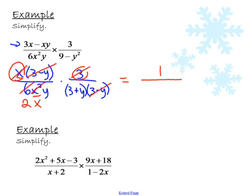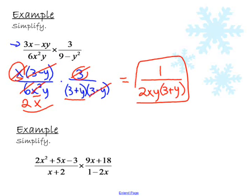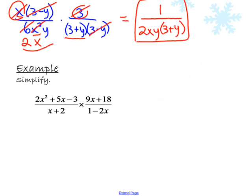We have a 2xy times, from over here, and a 3 plus y here. So 2xy times 3 plus y. We're going to leave that in factored form just like that. We're not going to go ahead and multiply out the denominator.